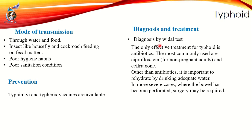Diagnosis is done using the Widal test. Effective treatment involves antibiotics. In some cases, surgery may also be required. Vaccines are available, including oral vaccines and injectable vaccines such as Typhim Vi and Typherix. These are the vaccines available for typhoid.